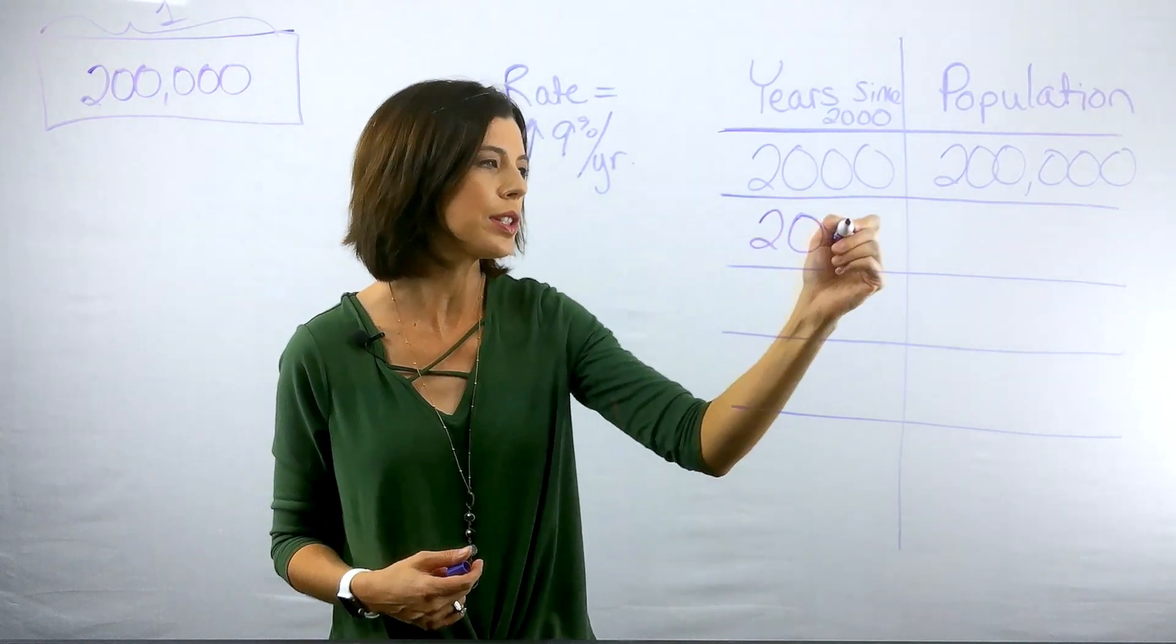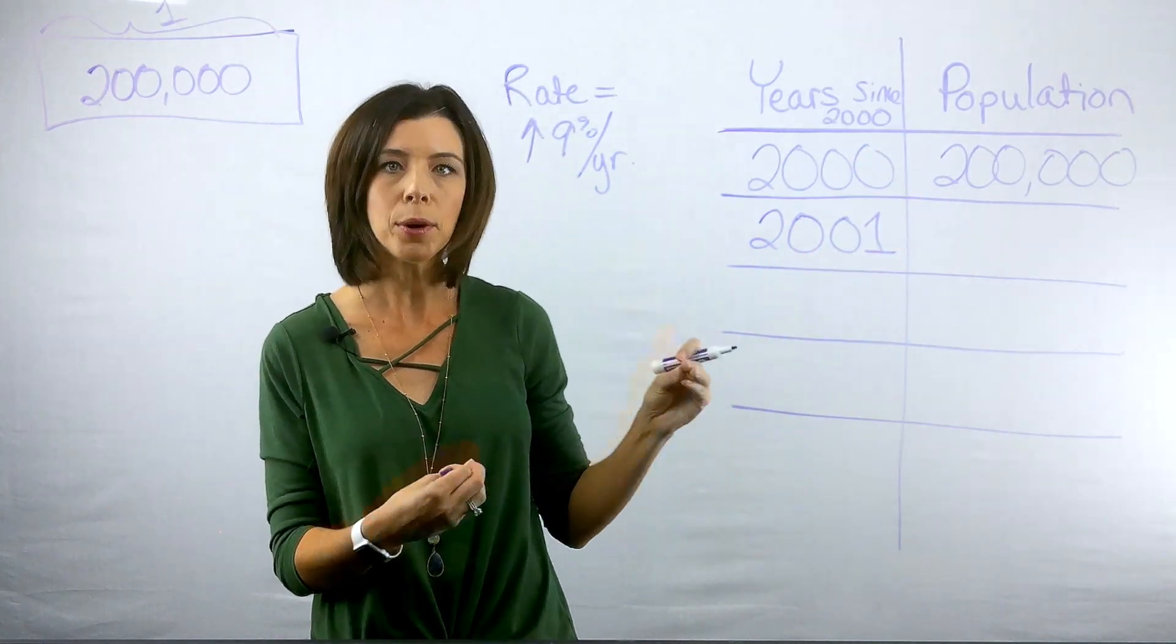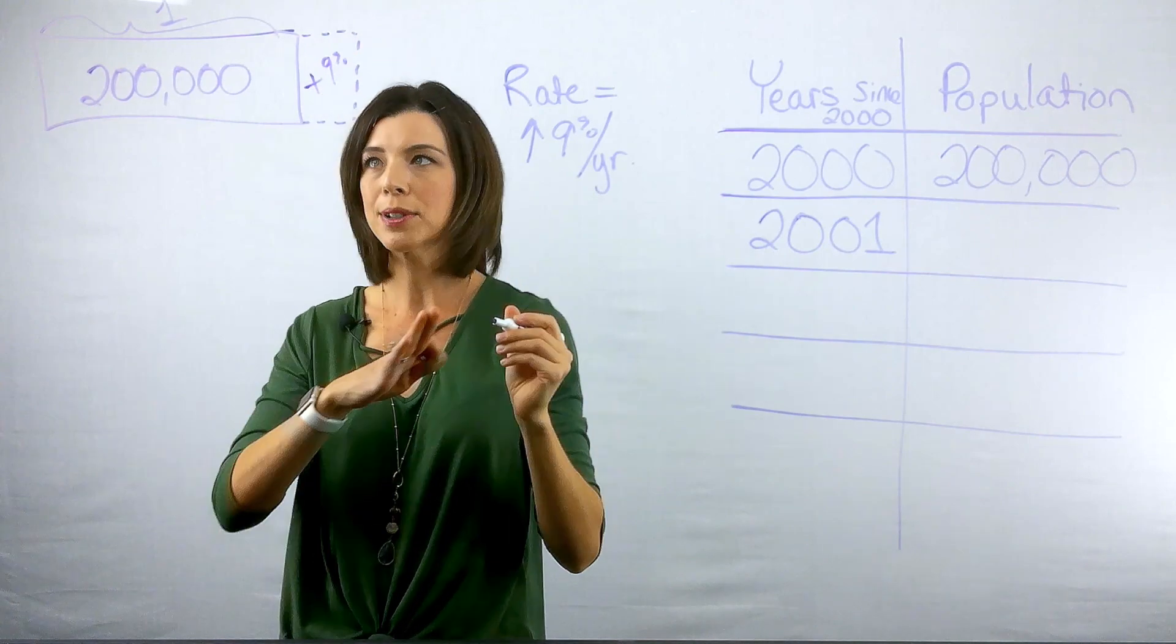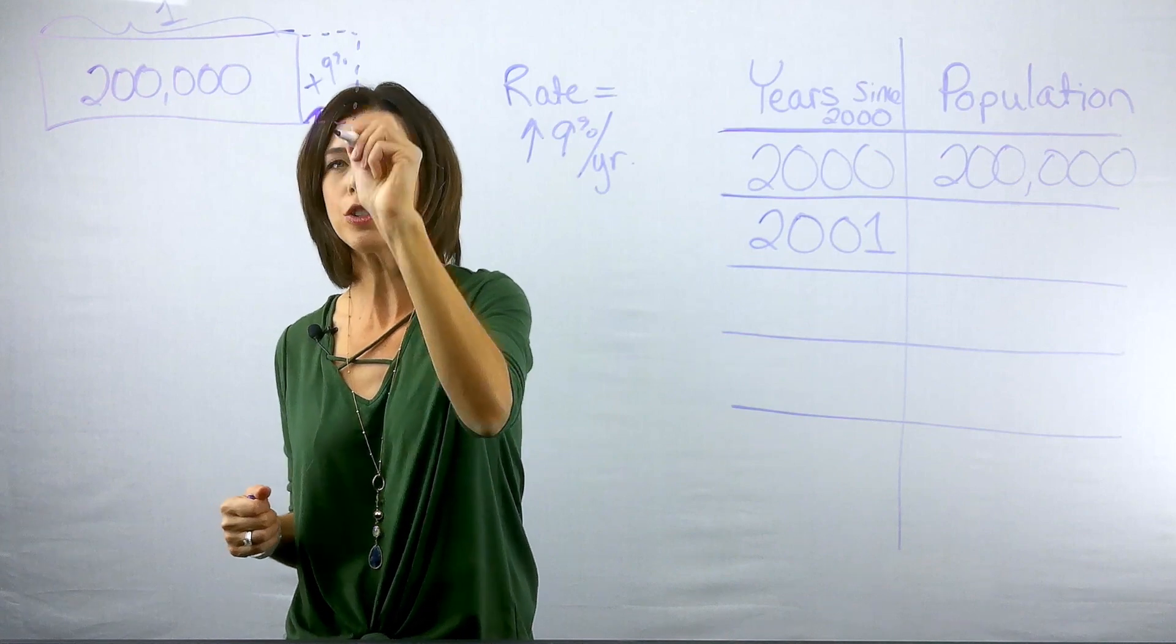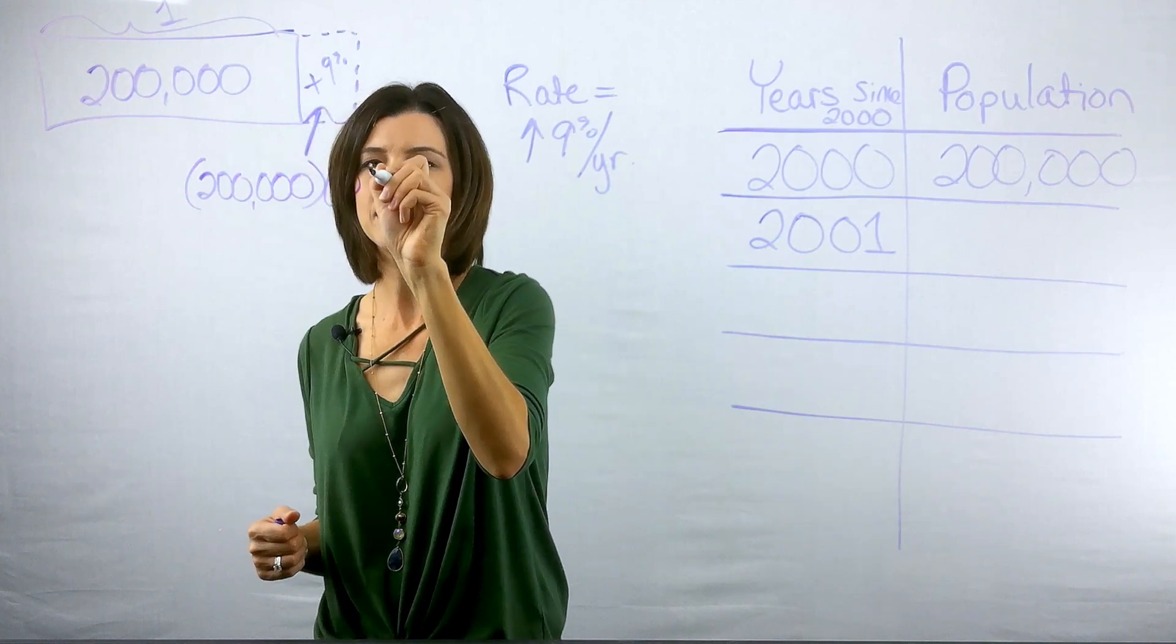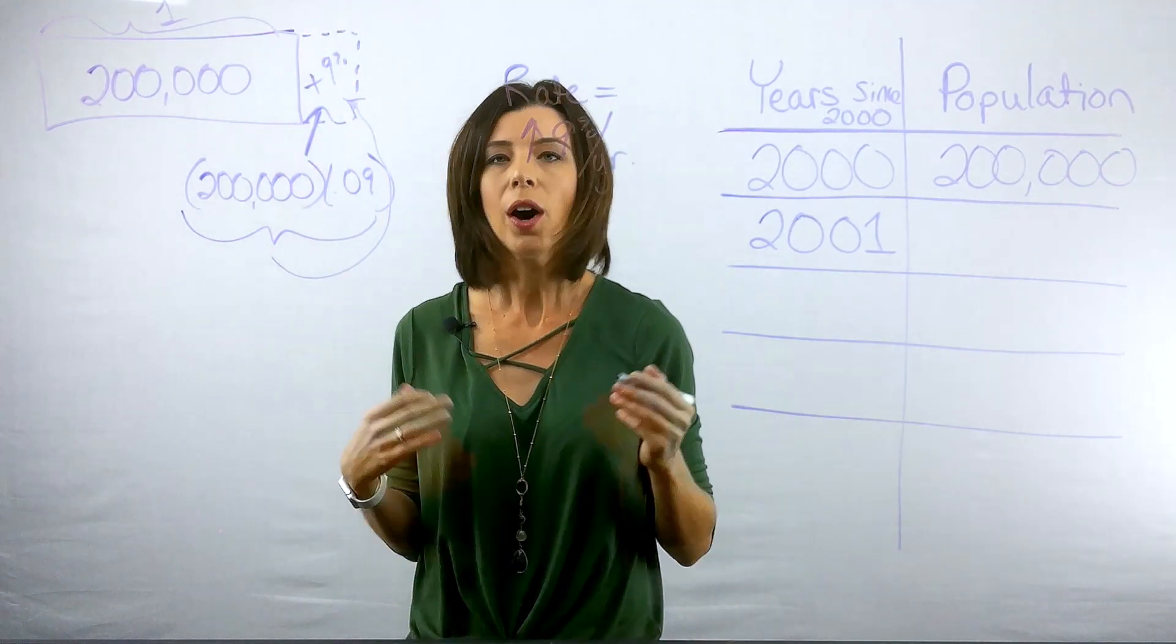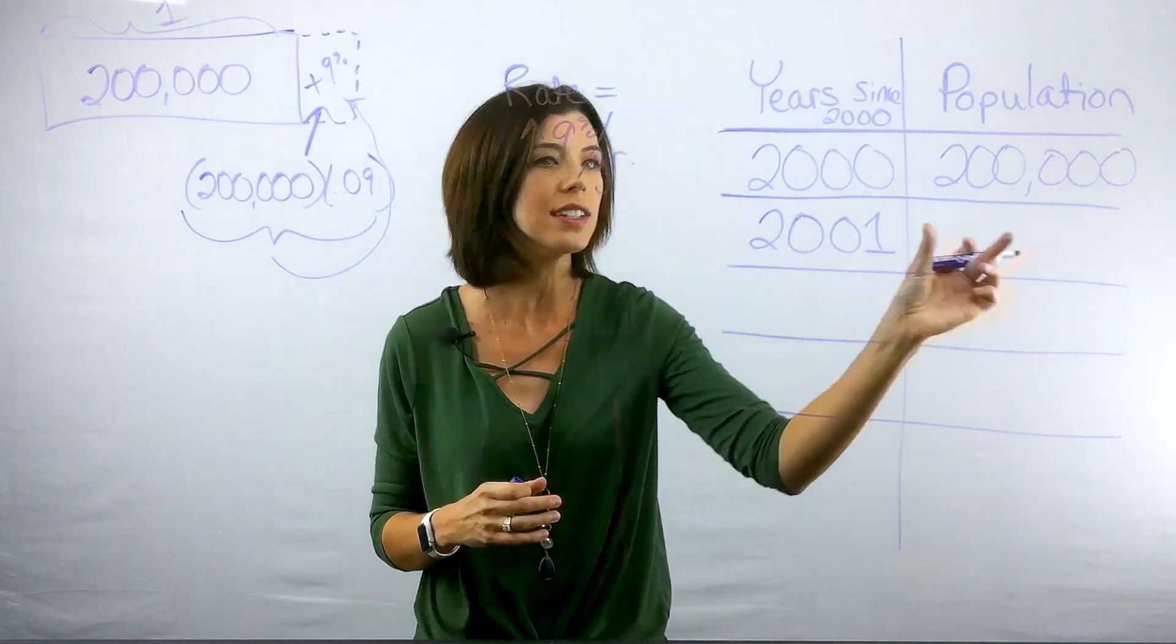Now I know that in the year 2001, what happened was I took this number, and I need to put on 9% more. That's not a perfectly proportioned drawing, but you get the picture. So I'm going to add on 9% of the 200,000. So in order to find this 9%, I'm actually going to need to do 200,000 times 0.09 for 9%. So this is going to give me just that little tiny piece right here. That's fine. But there's a quicker way to do it to figure out what would be this new number.